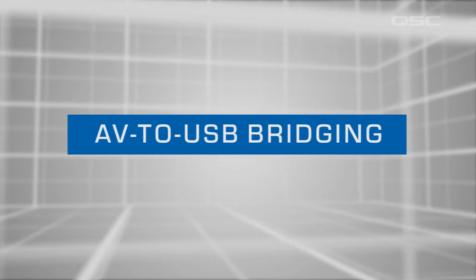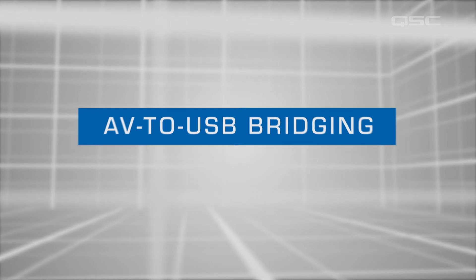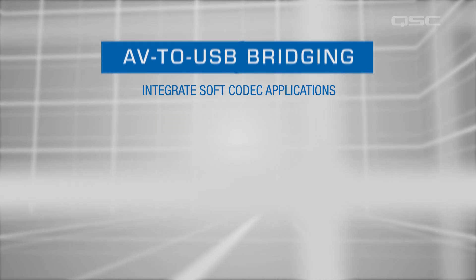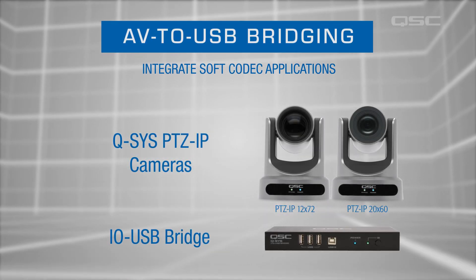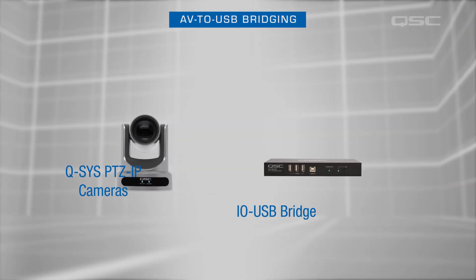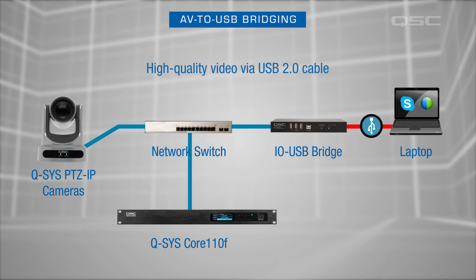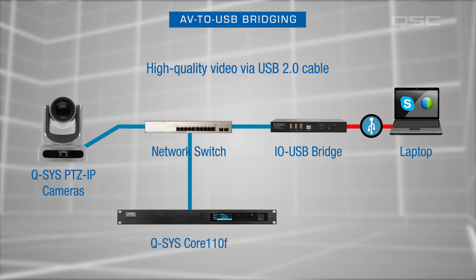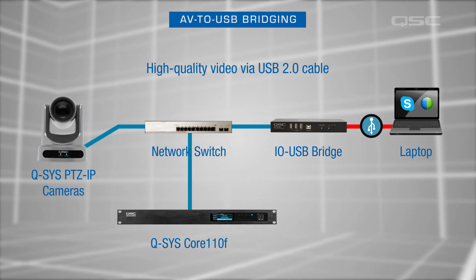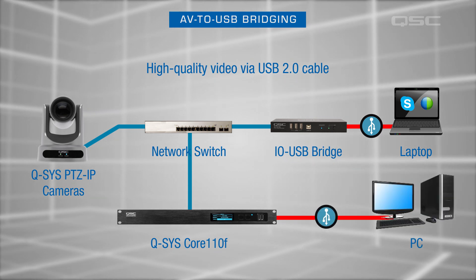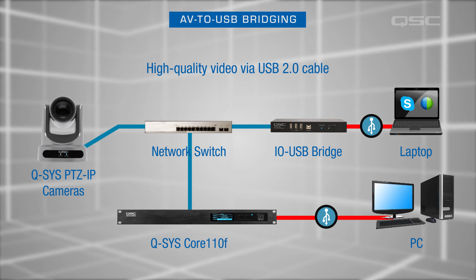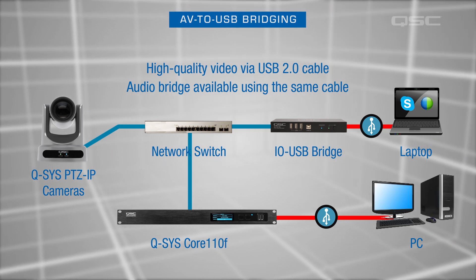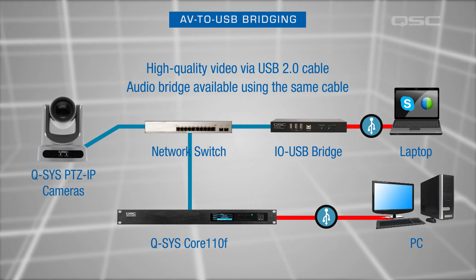Next on our list of peripherals are the AV to USB bridging devices, ideal for integrating soft codec applications like Skype for Business and WebEx into modern conference room hardware. These include the Q-SYS PTZ-IP cameras and the I.O. USB bridge. Both conference cameras stream high-quality video over the network to be delivered to a PC via a Q-SYS USB video bridge, typically through an I.O. USB bridge endpoint device to a laptop on a table, or directly from the Core 1-10F's USB port for rack mount PCs. These devices also allow USB audio bridges, which deliver up to 16 by 16 channels of audio to a computer on the same USB 2.0 cable as the video bridge.